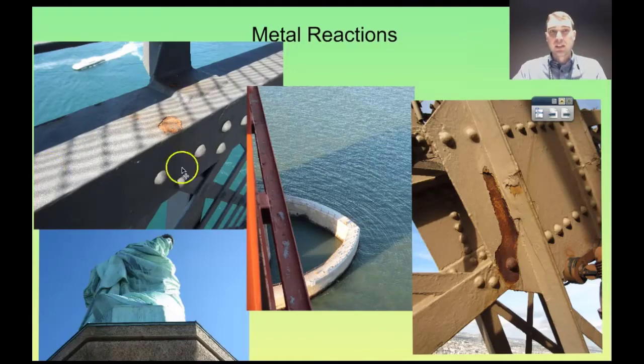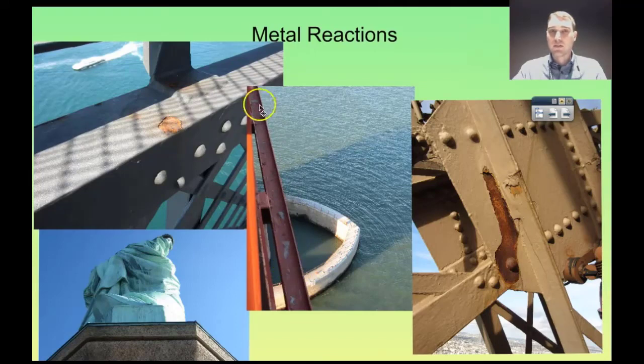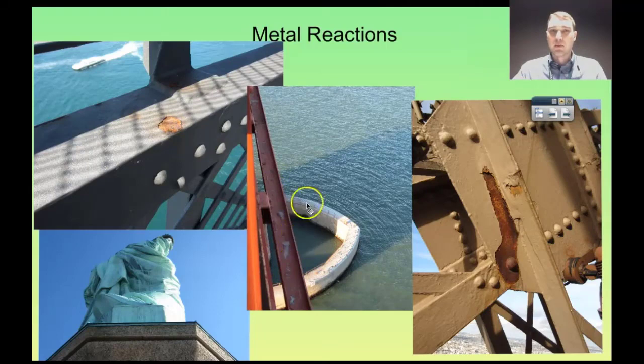Here's the Sydney Harbour Bridge and here is a nice big spot of oxidation here, so there's rust forming. This is the Golden Gate Bridge in San Francisco, and again you can see where the paint is flicking away from the orange bar here.